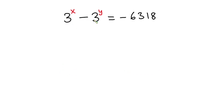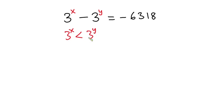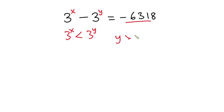The question tells us that when 3 to the power y is taken from 3 to the power x, the difference is negative 6318. This means that 3 to the power x is less than 3 to the power y — in other words, 3 to the power y is greater than 3 to the power x. Since we have equal bases, the difference is caused by the exponents.